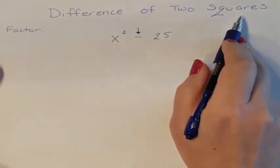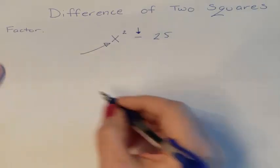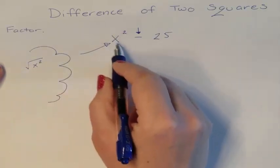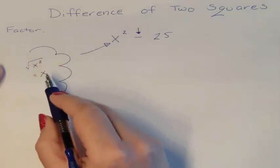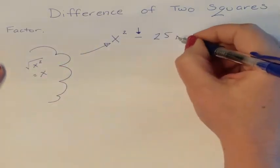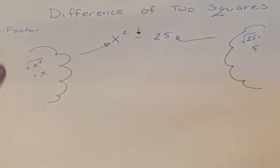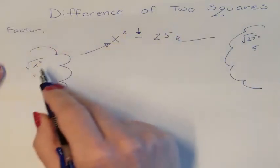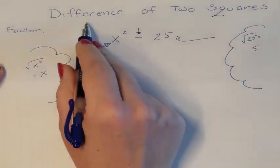Two squares — what that means is that in the back of your mind you need to be asking yourself, is this a square? Can I take the square root of this front term, which is x squared? The square root of x squared is x, so I can take the square root of the front term. Can I take the square root of the back term? The back term is 25. The square root of 25 is 5. So I have a subtraction, which is a difference, and I have two squares, because both terms are perfect square roots.